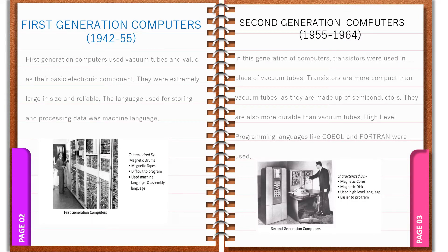First generation computers used vacuum tubes as their basic electronic component responsible for processing of data. These components were very large in size, which made the computers physically very large, requiring large rooms for installation. They used magnetic drums for memory. These computers produced a large amount of heat due to large consumption of electricity, and therefore required continuous cooling with large air conditioners. They were relatively unreliable and could produce inaccurate results sometimes. Input was based on punch cards and paper tape, and they performed slow input-output operations. Examples of these computers are UNIVAC and ENIAC.